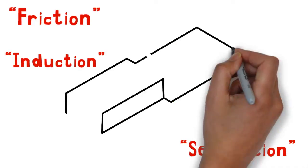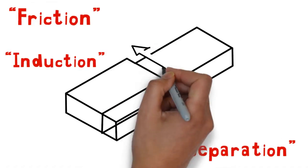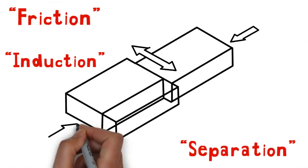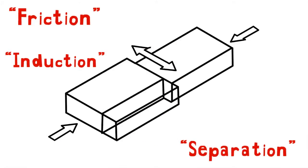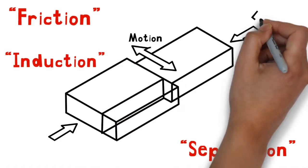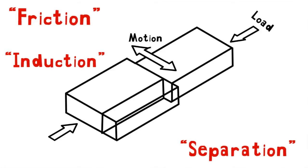The five main causes of static electricity in industry are friction, contact and separation, rapid heat change, cutting action and induction.